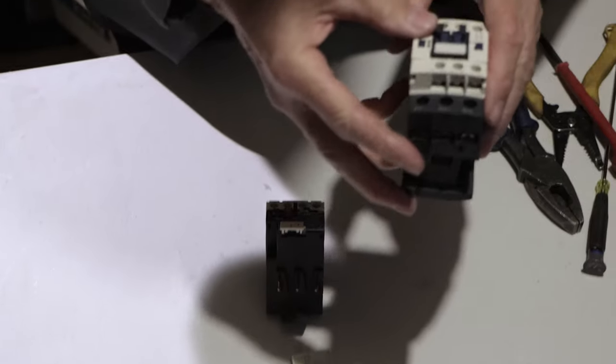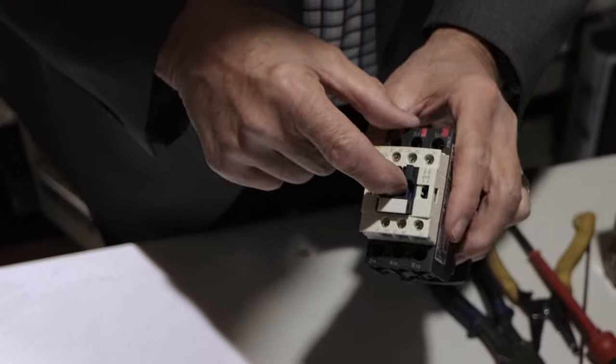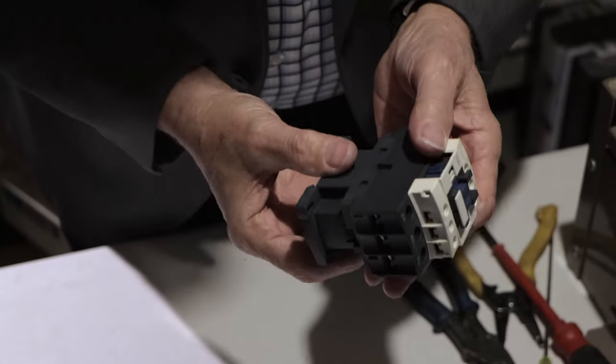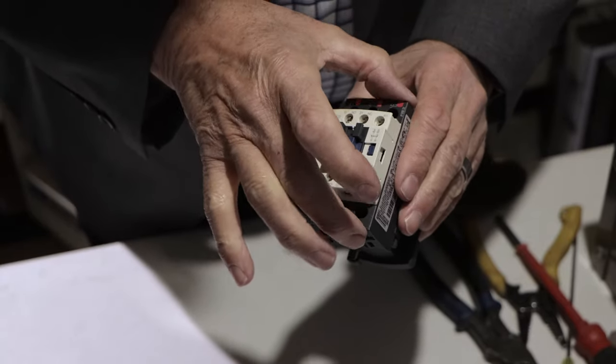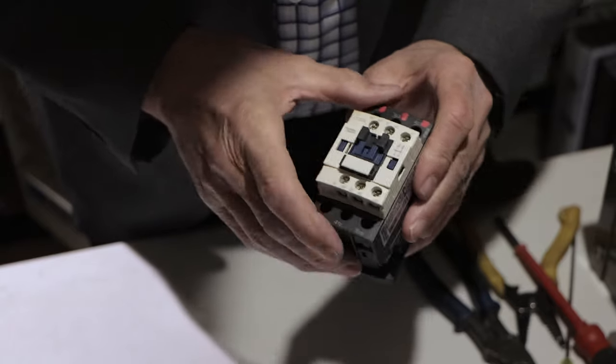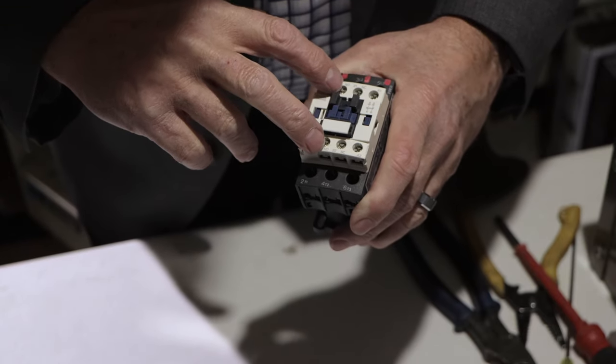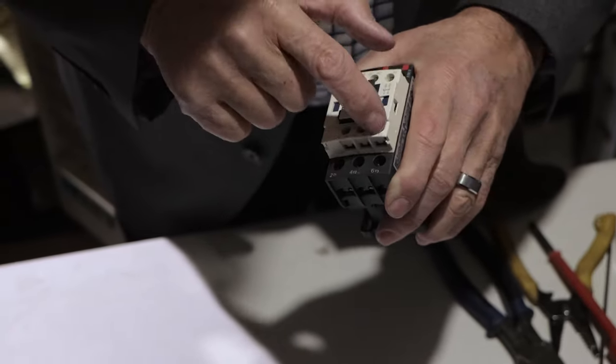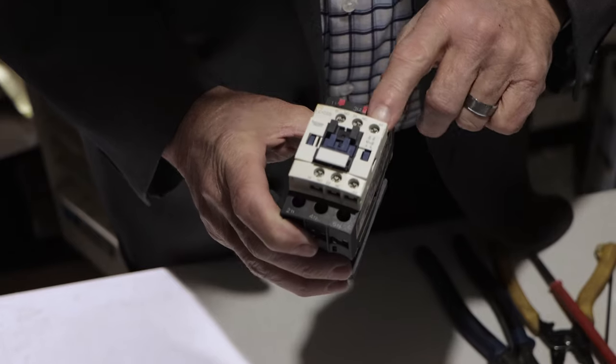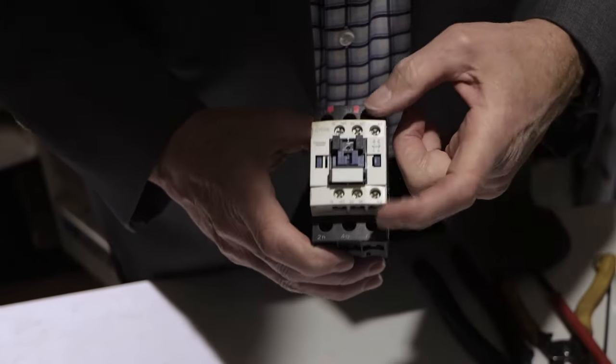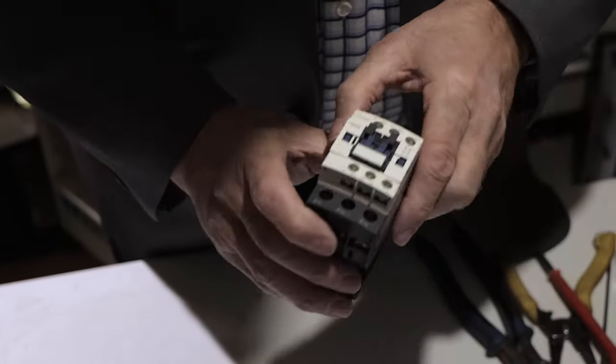We've got basically what we would call the starter, which is the contactor part, and we've already reviewed how we use the electromagnetic field in the magnet to draw the plunger down, and make contact between A phase, B phase, and C phase, and at the same time, we can close the normally open set of contacts, and open the normally closed set of contacts. And these right here, these are our coil windings. So A1 would be wire, typically wire number three, and A2 would be the neutral. So this is where the conductors are going to make contact with the winding, the coil.